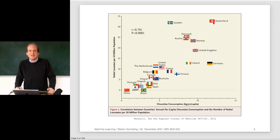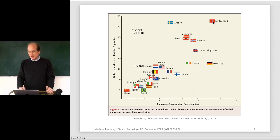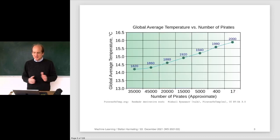Of course this is garbage. There's some other variable here, which is maybe how rich a country is. The richer countries can afford to buy chocolate, and richer countries also put more money into research or have better universities, and that's maybe why they have more Nobel laureates. Curiously, Germany eats a lot of chocolate and they are not so great with the Nobel laureates.